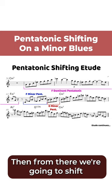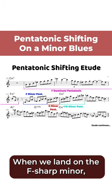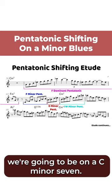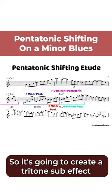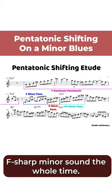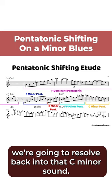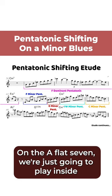Then from there we're going to shift up into F sharp minor. When we land on the F sharp minor we're going to be on a C minor seven, so it's going to create a tritone sub effect, and we're going to stay inside that F sharp minor sound the whole time. Then in that next measure we're going to resolve back into that C minor sound.